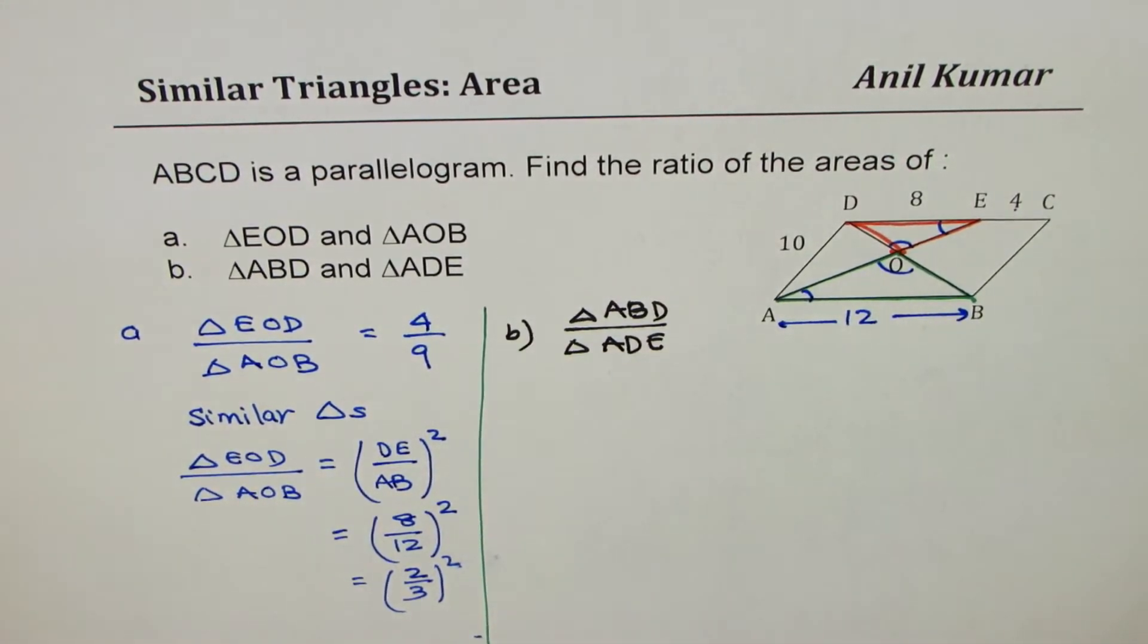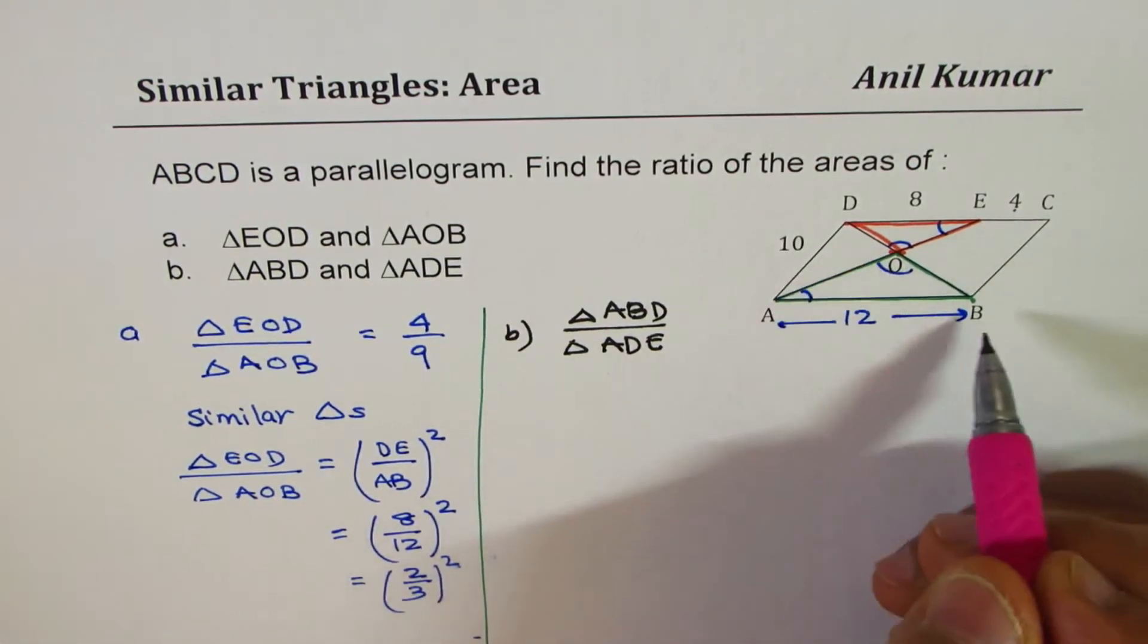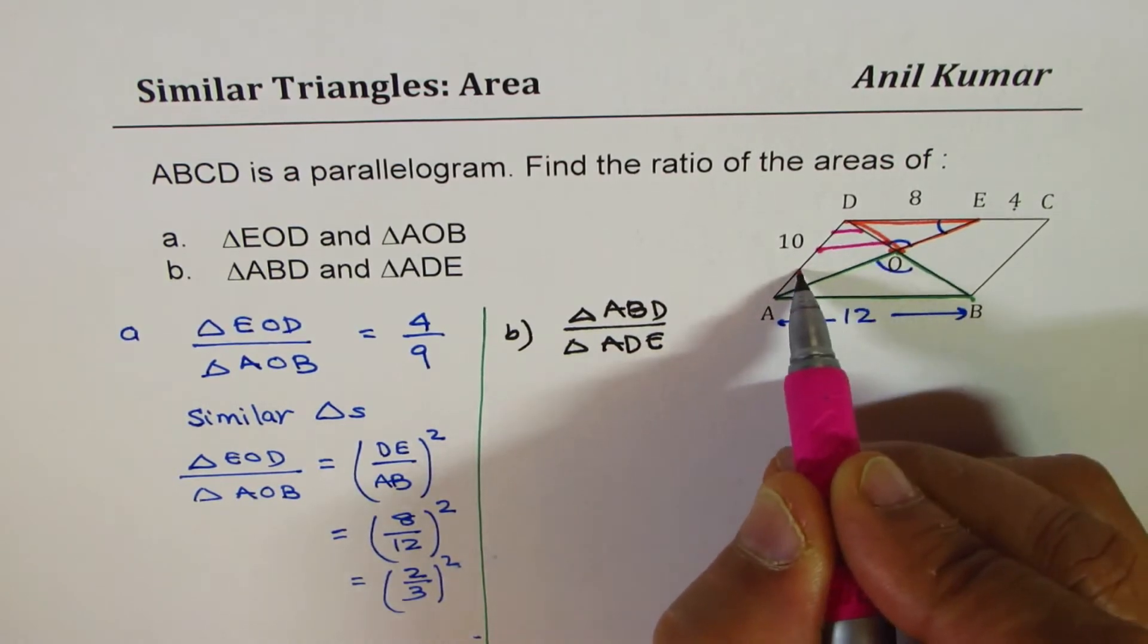Now ABD is ABD, AB to D, so that is the triangle which we are talking about, let me shade this one.